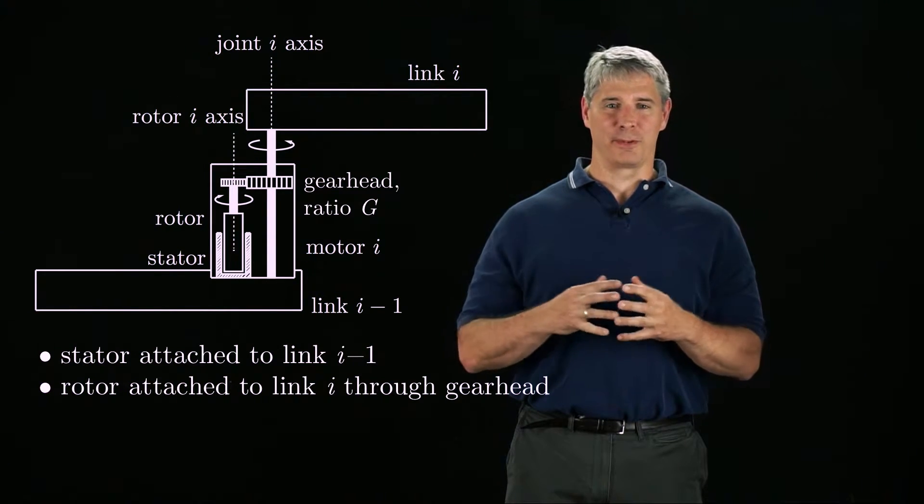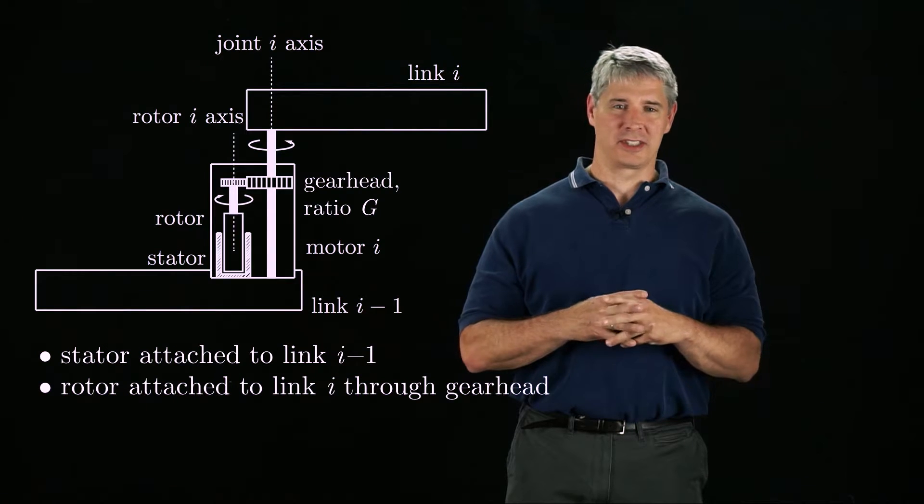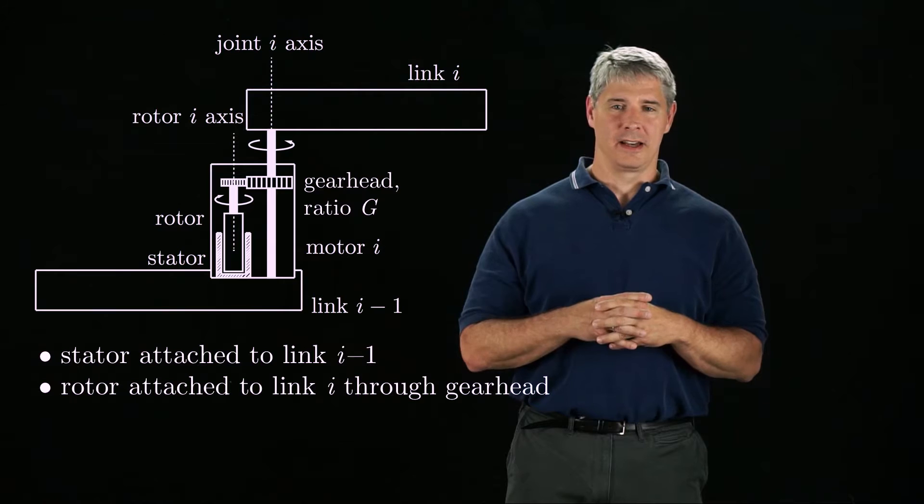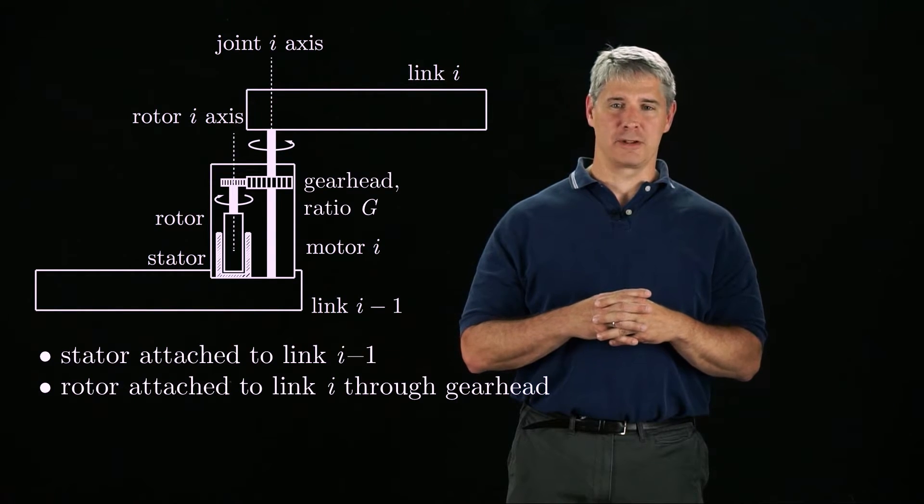It is not quite this simple, though, because the axis of the joint, which is aligned with the gear head axis, may not be the same as the rotor axis, and because the rotor spins at a different speed than the joint.